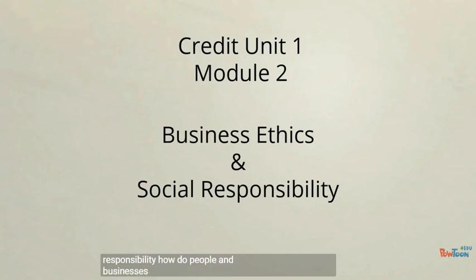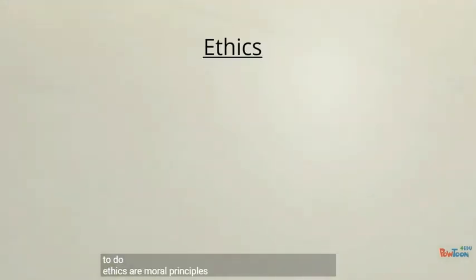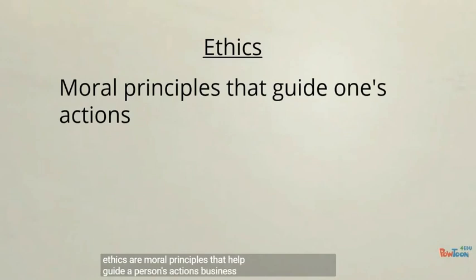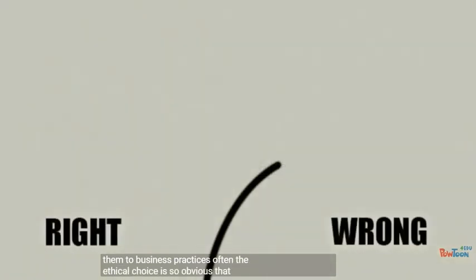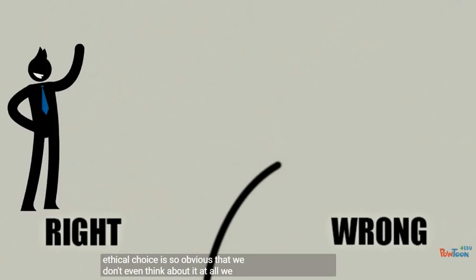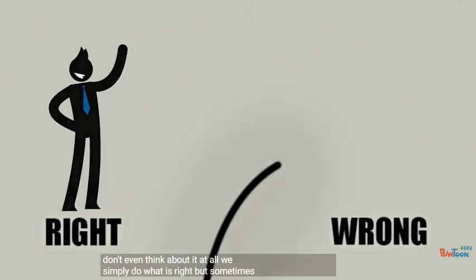How do people and businesses decide what's the right thing to do? Ethics are moral principles that help guide a person's actions. Business ethics take those same principles and apply them to business practices. Often the ethical choice is so obvious that we don't even think about it at all. We simply do what is right.